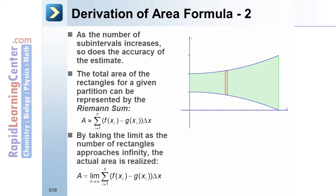By taking the limit as the number of rectangles approaches infinity, the actual area is realized: A = lim(n→∞) of the previous expression.